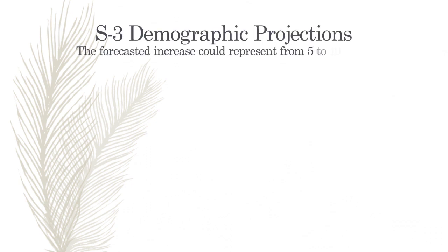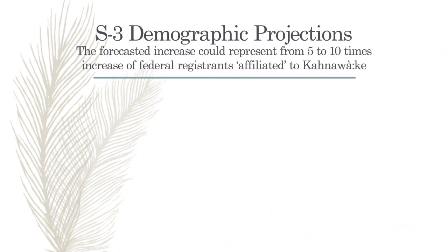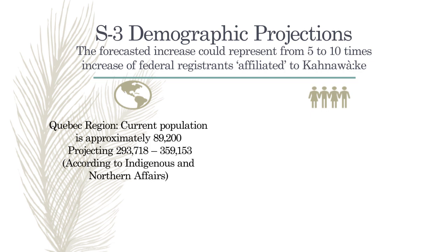We thought it was important to have a Kahnawake-made process, which is why we created a team and have been doing engagements and bringing awareness to all these issues. What's most important are the demographic projections as a result of S-3. The forecast increase could represent a 5 to 10 times increase of federal registrants affiliated to Kahnawake. Currently in Quebec, there's a population of 89,200 status Indians, with a projection of 293,718 to approximately 360,000 new status Indians.